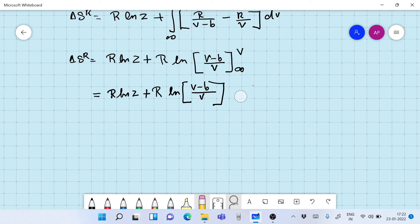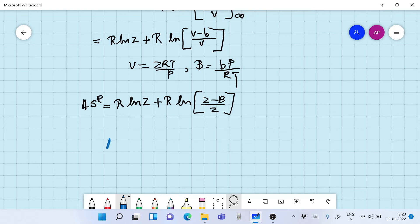And we can now put V is equal to ZRT by P and B is equal to BP by RT. So what we have is B is equal to BP by RT. And finally we get the expression. We can rewrite this. So this is the expression for residual entropy for a Van der Waals gas.